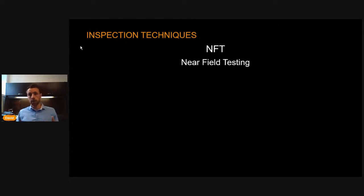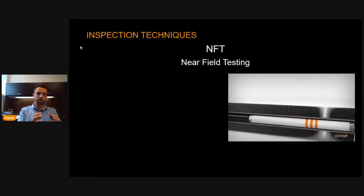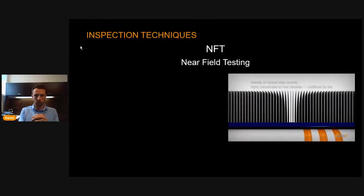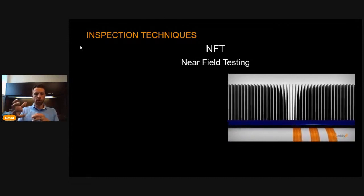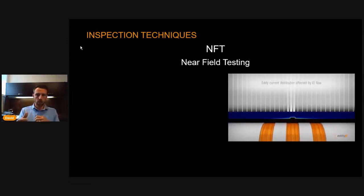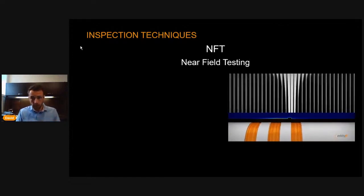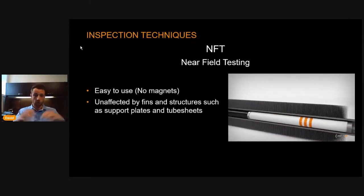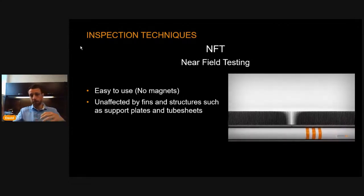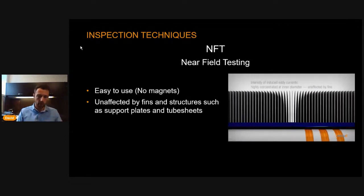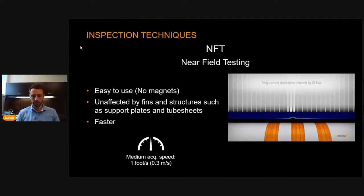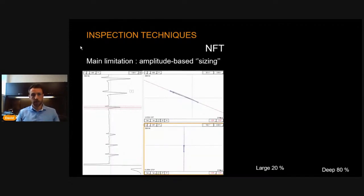The next one is Near Field Testing (NFT). Near field is a similar principle to remote field, but we bring the receiver and driver closer together, so we only measure the inside signal response of the tube. It's easy to use, doesn't require any magnets, and is unaffected by outside structure — whether you have a support plate, fins, or tube sheet, it doesn't impact the near field results. It's also faster than IRIS: about one foot per second, or 0.3 meters per second.